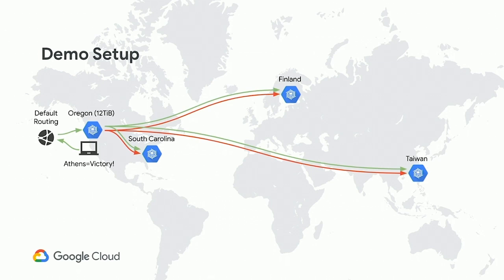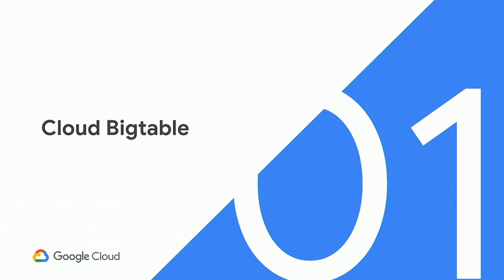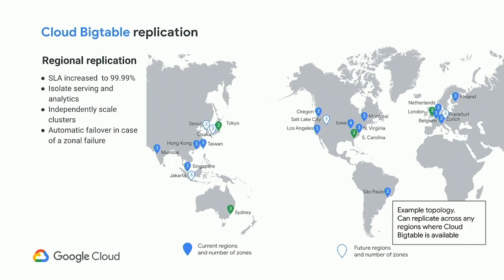OK, so we got that kicked off. We'll come back later and do some fun things with this new global instance we have set up. I'm going to talk a little bit about what Cloud Bigtable is, how it works, and what you actually use it for. So let me get into the replication thing — a year ago, we announced regional replication, which allowed you to put multiple clusters into a single region.